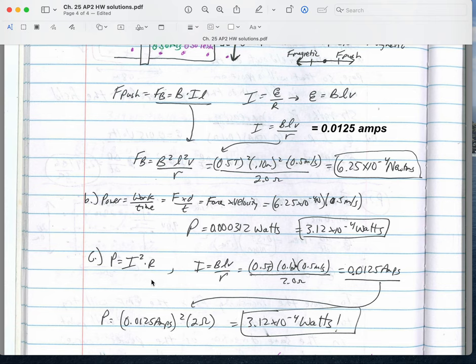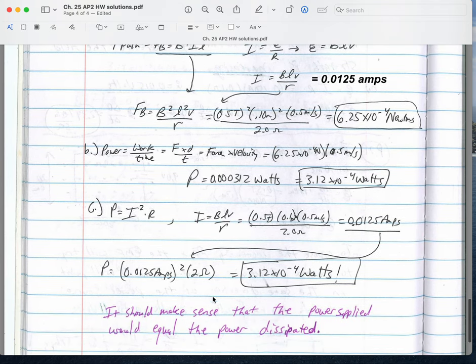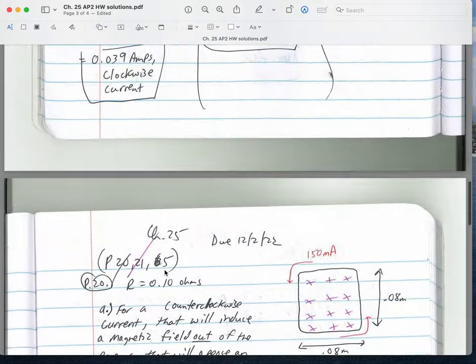That's also equal to I squared times R, so I could actually figure out not only the power that I'm creating by pushing this thing, but also the power dissipated by the circuit, which is I squared times R or I times E, which we would have figured out up here as well. That's also 3.12 times 10 to the negative fourth watts. It should make sense that the power supplied by you pushing things would equal the power dissipated electrically. So hopefully those help.